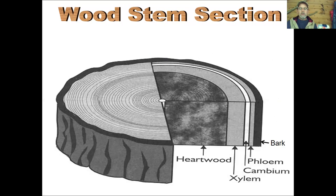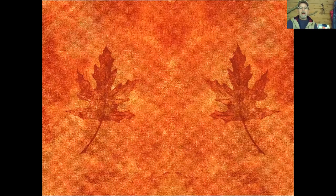Cambium is located beneath the bark. Each year through mitosis it produces two different types of cells. It produces xylem, which is new wood — its function is to carry water and nutrients up to the rest of the tree. We remember xylem because it's going up: 'zi-high.' Cambium also produces phloem, which is new bark. The function of phloem is to carry the sugar produced in the crown of the tree down to the rest of the tree — we remember that as 'flow-low.' As xylem ages it becomes heartwood; as phloem ages it becomes bark.